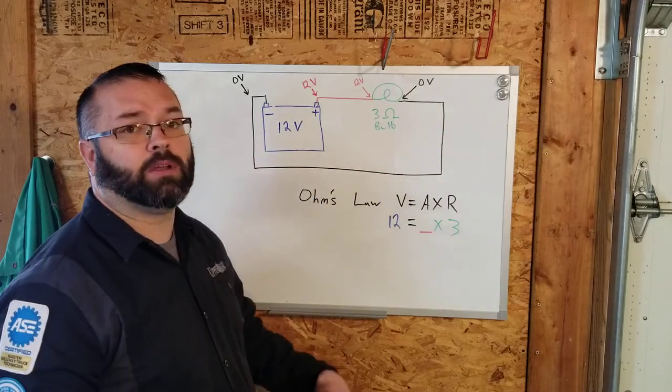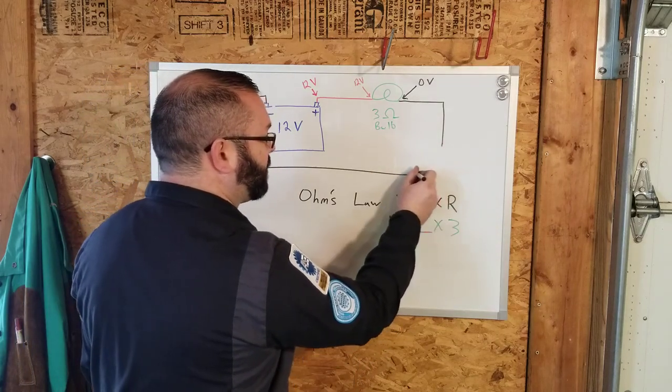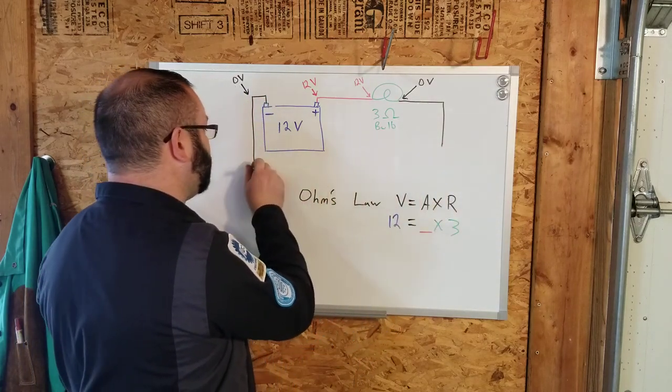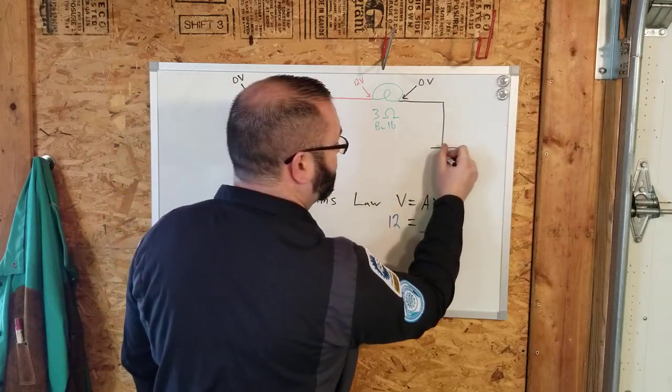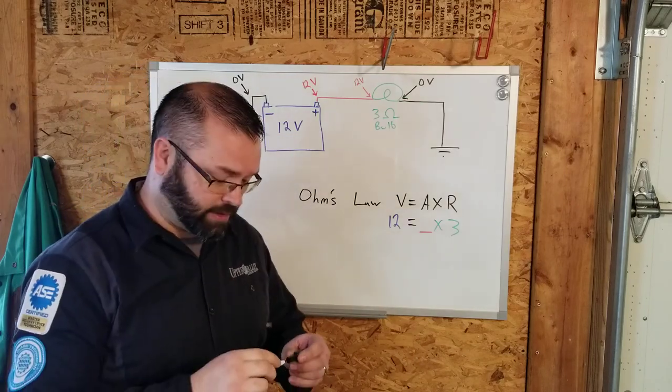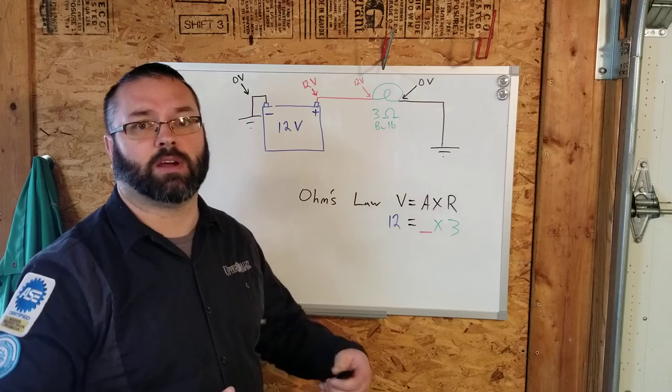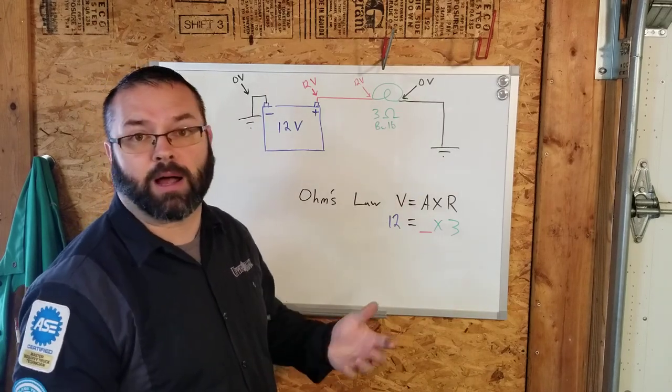Now, in electrical and automotive stuff, they draw it a little bit different. They don't draw a ground wire for every component. They use this symbol as ground. So that's usually like a chassis ground or it's grounded through the engine block, something that's a conductor in the vehicle. So it is grounded through probably the body.